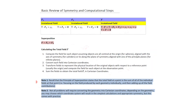Two specific notes: first, superposition states that the total field at a point is the sum of all individual fields at that point — focus on the field produced by each geometry individually, then add all contributions. Second, not all problems require converting to Cartesian coordinates; depending on the geometry, you may choose the coordinate system that results in the simplest calculations, but this comes with practice.